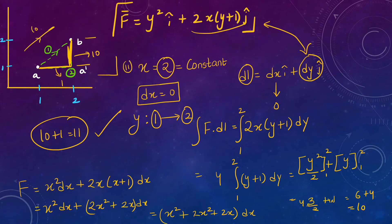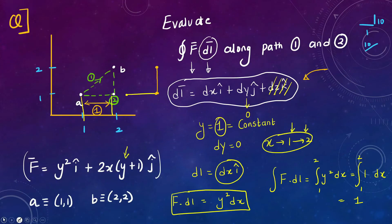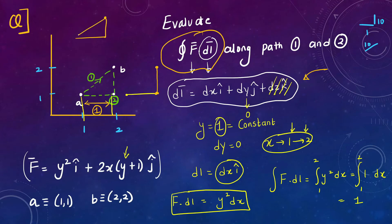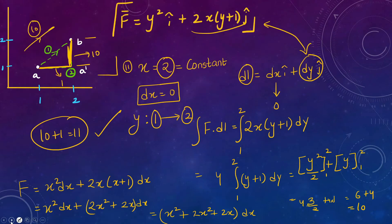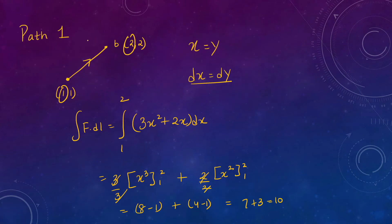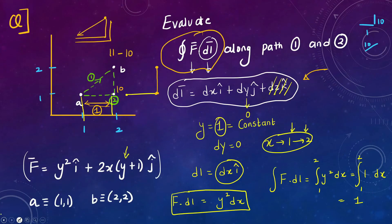So along path 1 the line integral is 10, and along path 2 it is 11. The answers are different, confirming that line integration depends upon the path chosen. If we traverse path 2 forward and return via path 1 (minus sign since opposite direction): 11 − 10 = 1, so the closed loop integral is 1, confirming path dependence.